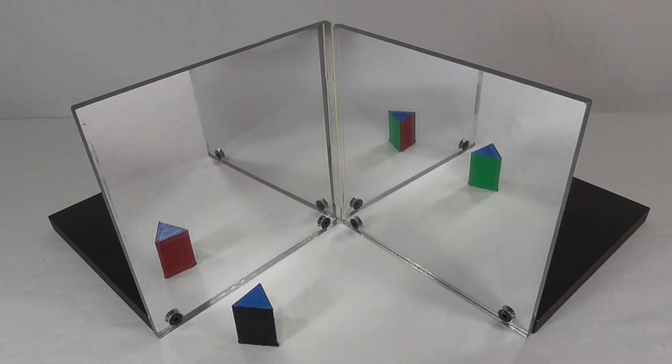If you're using two mirrors, identify the object that will create your images. Place the object slightly closer to one of the plane mirrors.